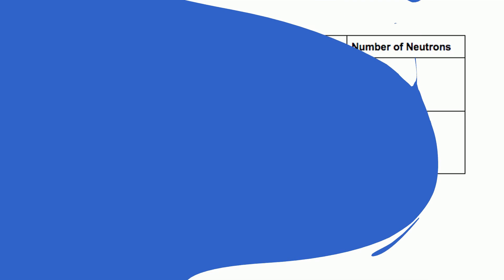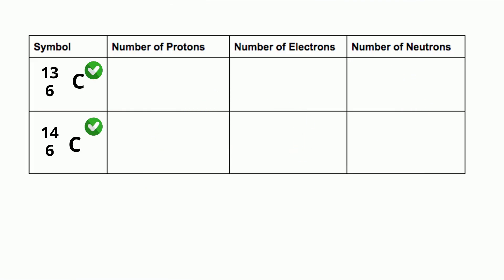Let's look at another example. You have carbon 13 and carbon 14. Both carbons have 6 protons and 6 electrons. Now, for the number of neutrons.